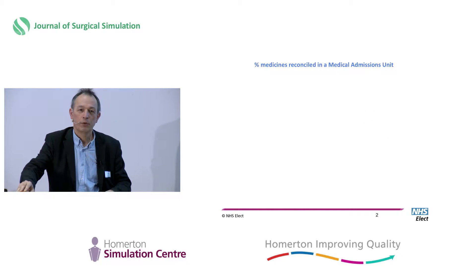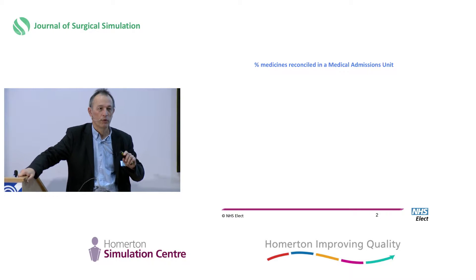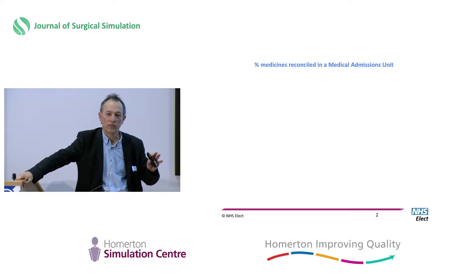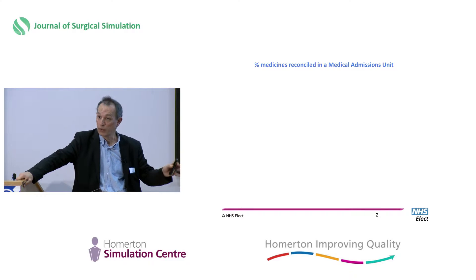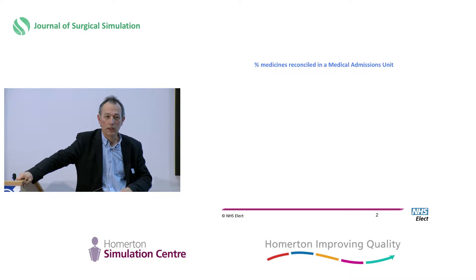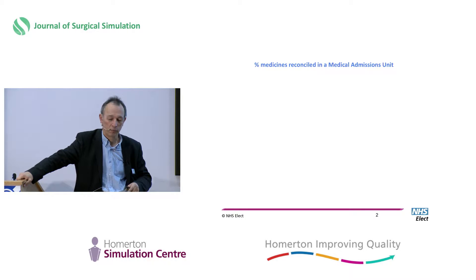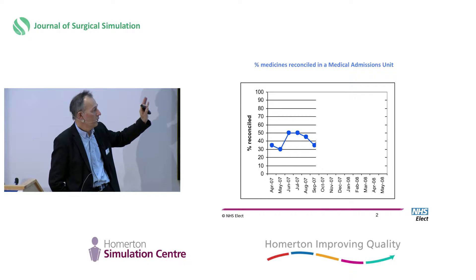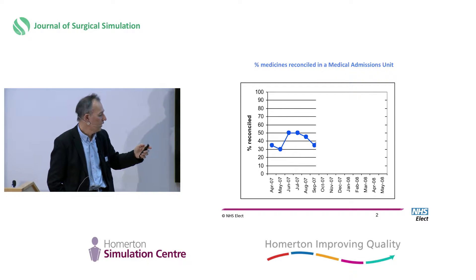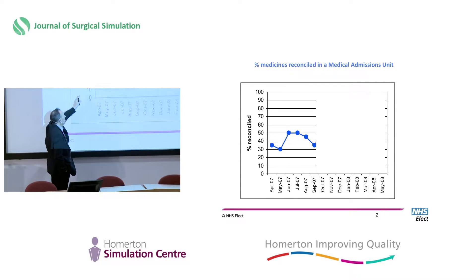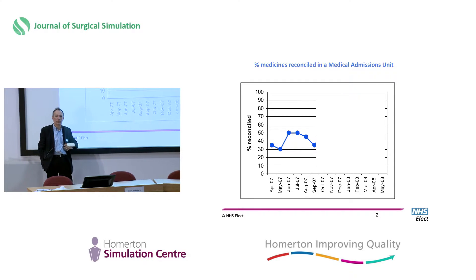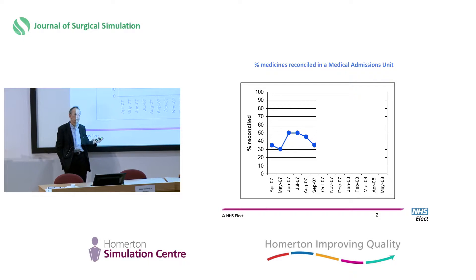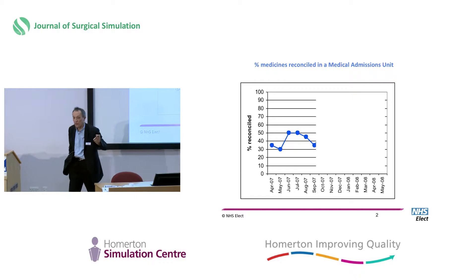I'm going to start with a project — a real project, not one I was involved with but one I've been told about. It's quite interesting because you can tell the story of this improvement using a simple line graph such as the ones that Amar was talking about. This is a team working in the medical admissions unit who wanted to improve the medicine reconciliation process. When they started collecting data, they realised they weren't doing terribly well. In the baseline period, their performance was between 30 and 50% of patients getting that process done right.